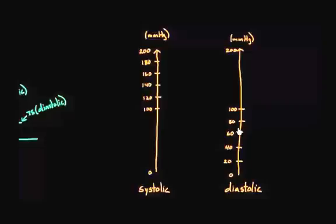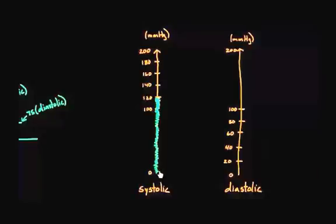Let's say my systolic pressure is 115. On this number line, 115 would be about right here. Anything below 120 is in the green zone, and this goes all the way down to zero. So if my systolic was 97 or 103, that would all be in the green zone — meaning I do not have hypertension. That's a nice safe area to have your blood pressure in.